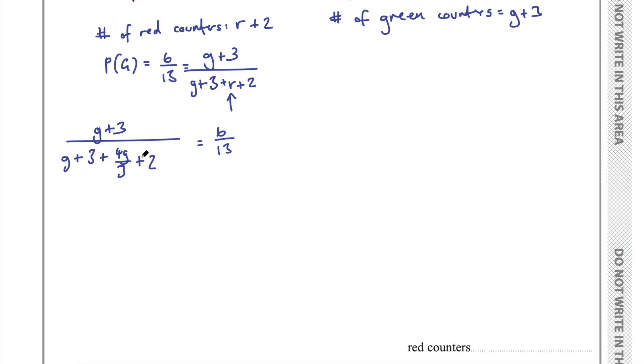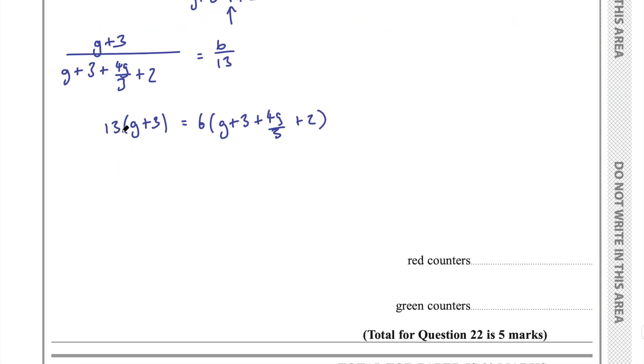So let's go ahead and do that. Firstly, you need to cross multiply. So multiply the G plus 3 by 13. Multiply the 6 by the denominator over here. So this will be 6 times G plus 3 plus 4G on 3 plus 2. Expand the brackets out. This will be 13G plus 39 equal to 6 times G, 6G. 6 times 3, 18. 6 times 4G on 3, well, this is like 6 divided by 3, which is 2, times 4G, which is 8G. Plus 6 times 2, which is 12.